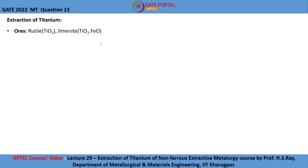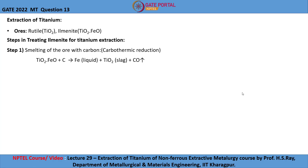Let us look at the steps in treating ilmenite for titanium extraction. The first step is the smelting of the ore with carbon, which is carbothermic reduction, where iron is in molten form with titanium oxide as a slag and carbon monoxide gas.